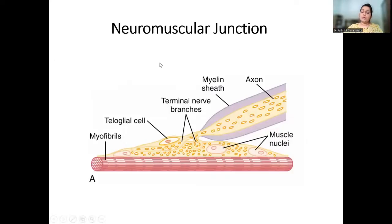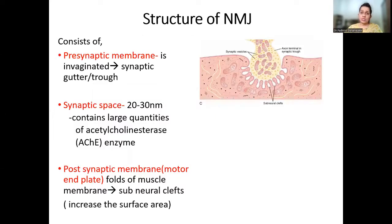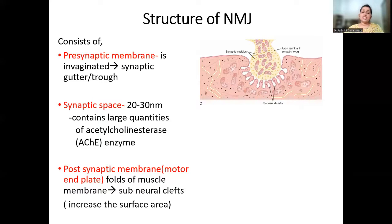The neuromuscular junction consists of mainly three components. The first is the pre-synaptic membrane, then you have the synaptic space or cleft, and then the post-synaptic membrane, known as the motor end plate. The pre-synaptic membrane is invaginated and known as the synaptic gutter or synaptic trough. The synaptic space is about 20 to 30 nanometers and contains large quantities of acetylcholinesterase enzyme.